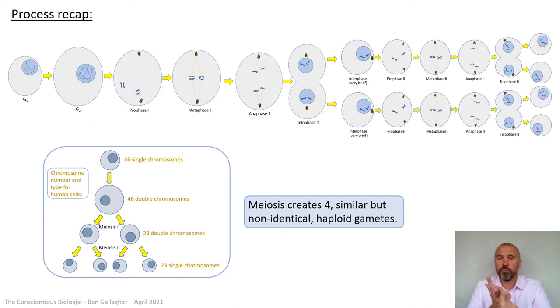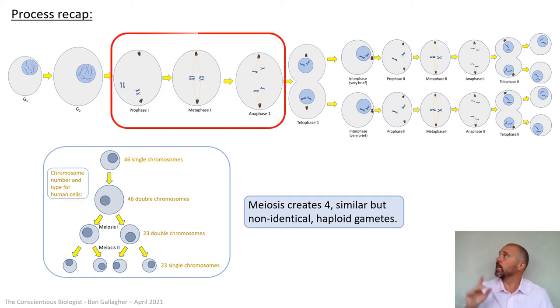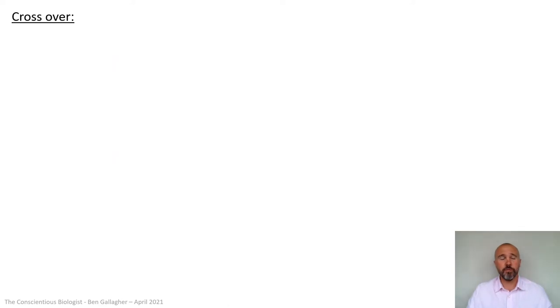The really important thing to remember is that meiosis creates four similar but non-identical haploid gametes. Similar but non-identical meaning they have the same genes in the same positions on the same 23 chromosomes, but they could contain different alleles of those genes. Take a screenshot of this if you need it. What we're looking at in this video is some key events during prophase one, metaphase one, and anaphase one that really promote high levels of variation.